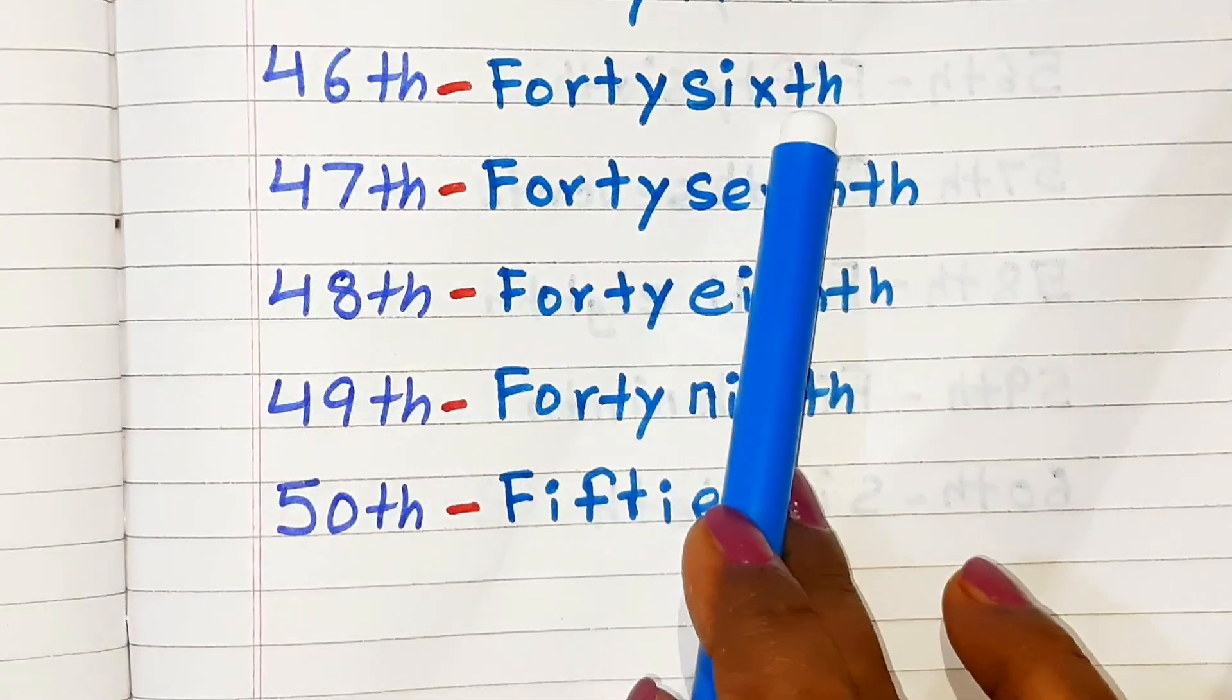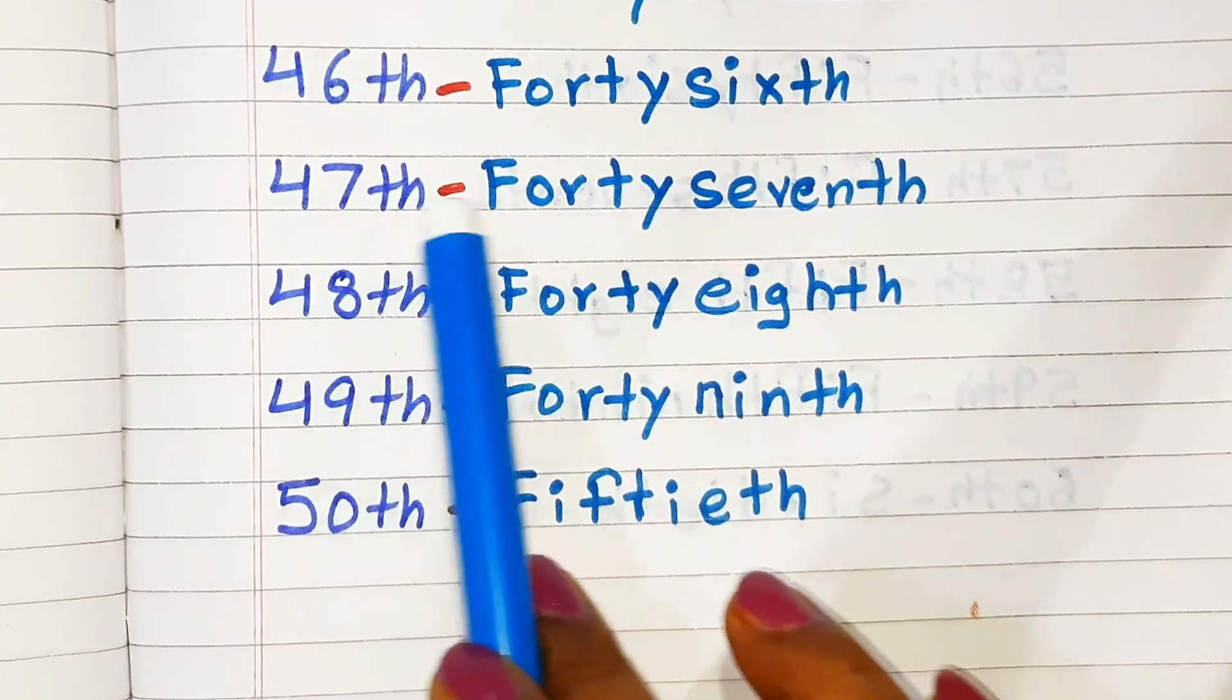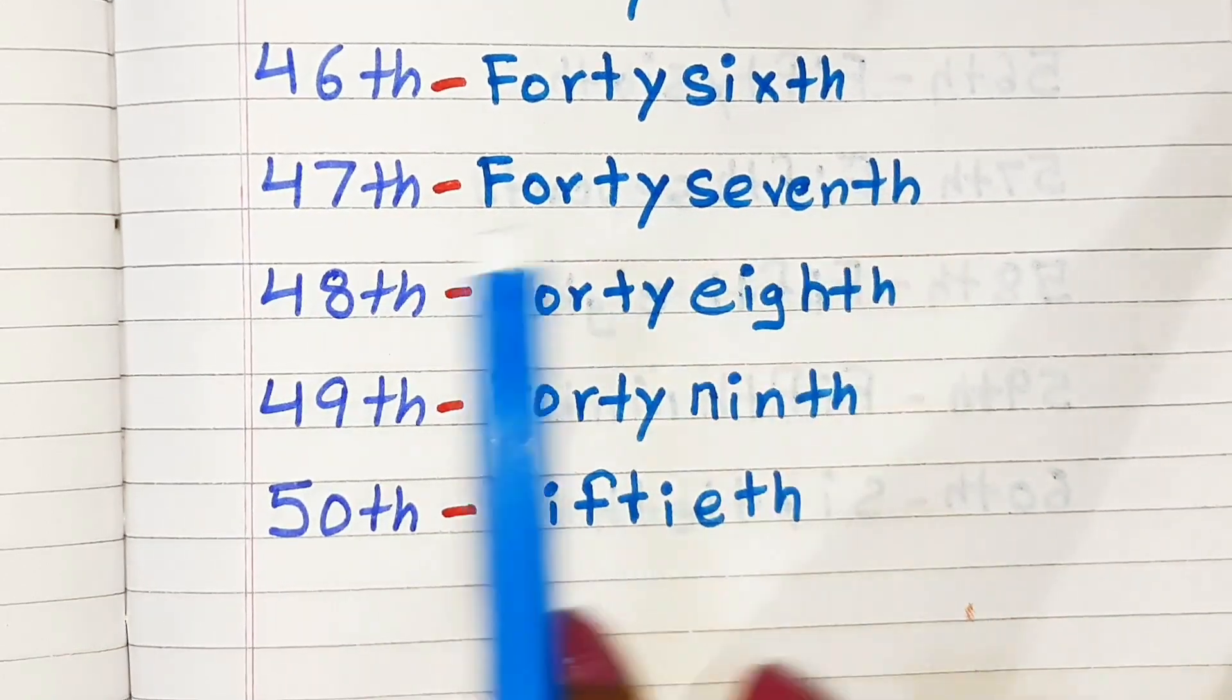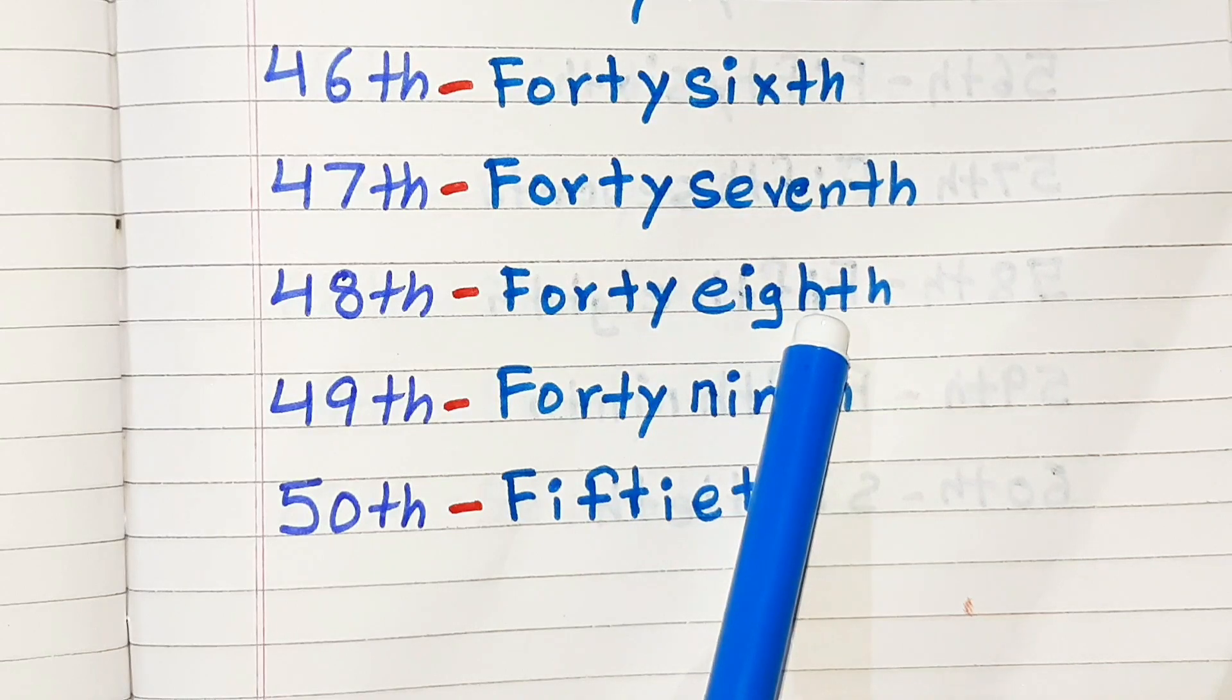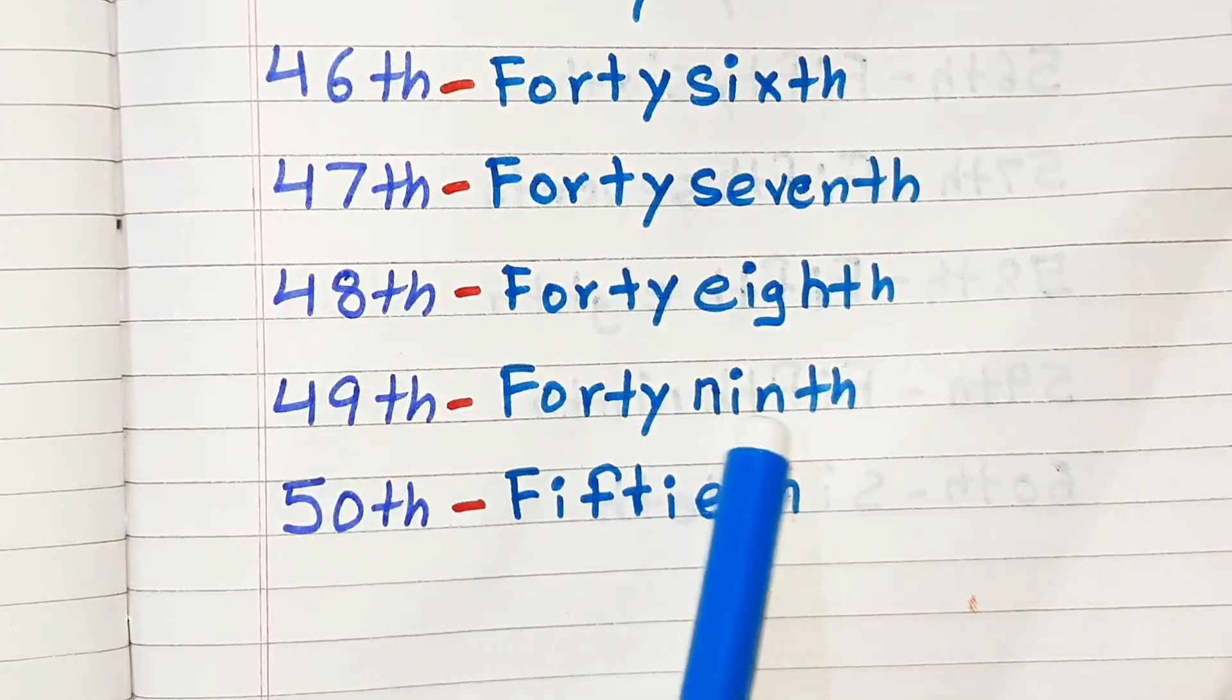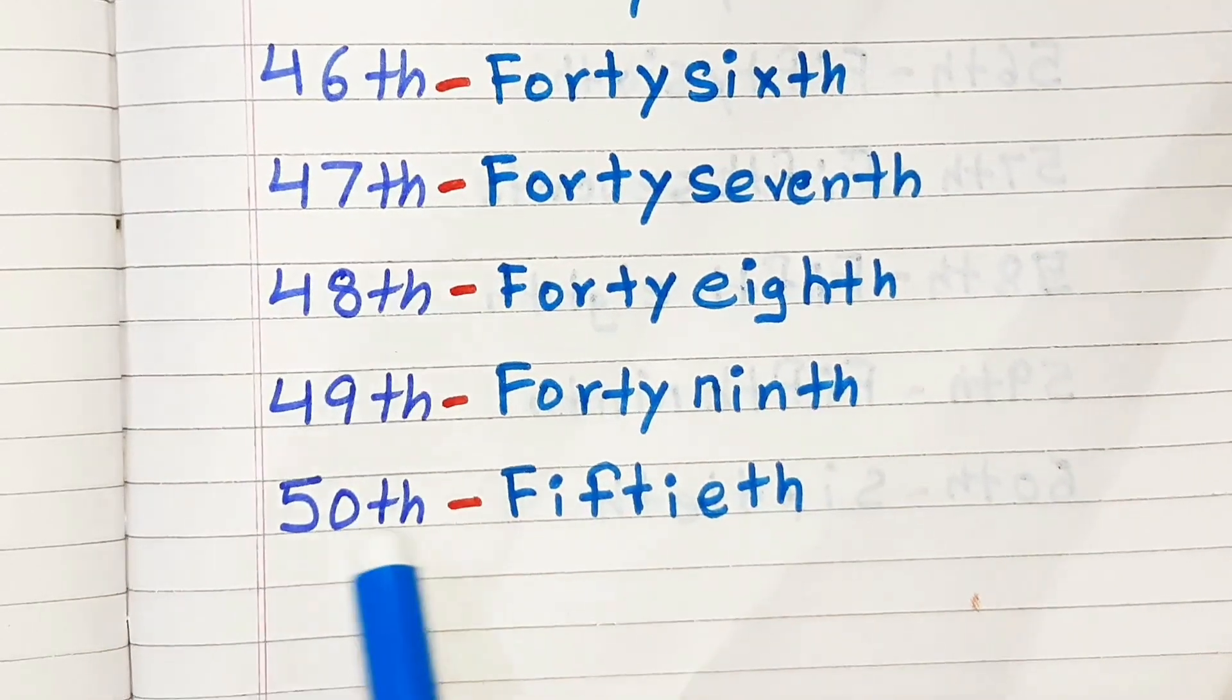Ordinal Numbers Forty-one to Fifty: Forty-first, Forty-second, Forty-third, Forty-fourth, Forty-fifth, Forty-sixth, Forty-seventh, Forty-eighth, Forty-ninth, Fiftieth.